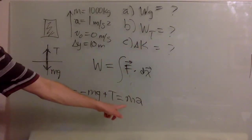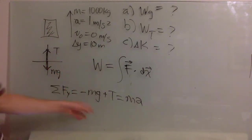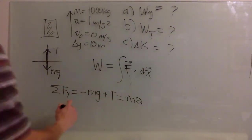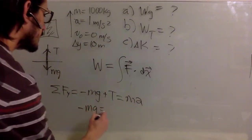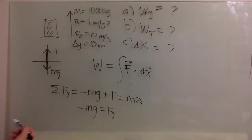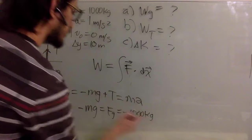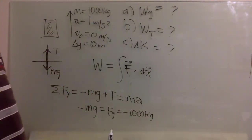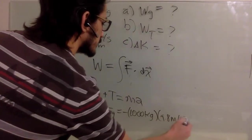We know the mass and we know the acceleration. We know the acceleration due to gravity. So we can get the tension. We can also get Fg — the force due to gravity — and it's going to be minus 1000 kilograms times 9.8 meters per second squared.